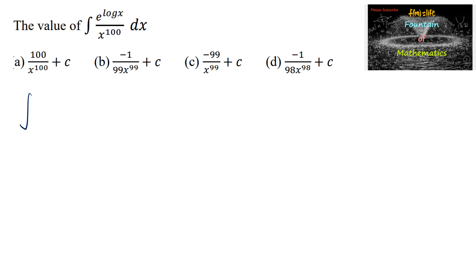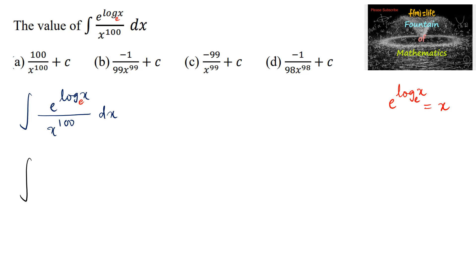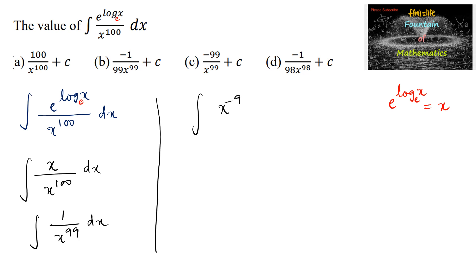The value of integral of e to the power log x upon x to the power 100 dx. We have a property in logarithm: e to the power of log x (when bases are the same) equals x. Here the base is e, so we can write e to the power of log x (base e) as x. This gives integral of x divided by x to the power 100 dx, that is 1 divided by x to the power (100 minus 1), that is x to the power of minus 99 dx.